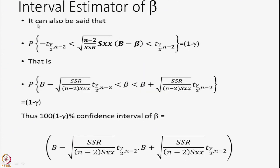This also gives rise to the interval estimator of beta, because the acceptance region of the hypothesis directly translates to a confidence interval. The probability of the acceptance region is 1 minus gamma, and therefore the 100(1 - gamma)% confidence interval for beta can be constructed. For example, if gamma is 0.01, we obtain a 99% confidence interval for the estimator of beta.